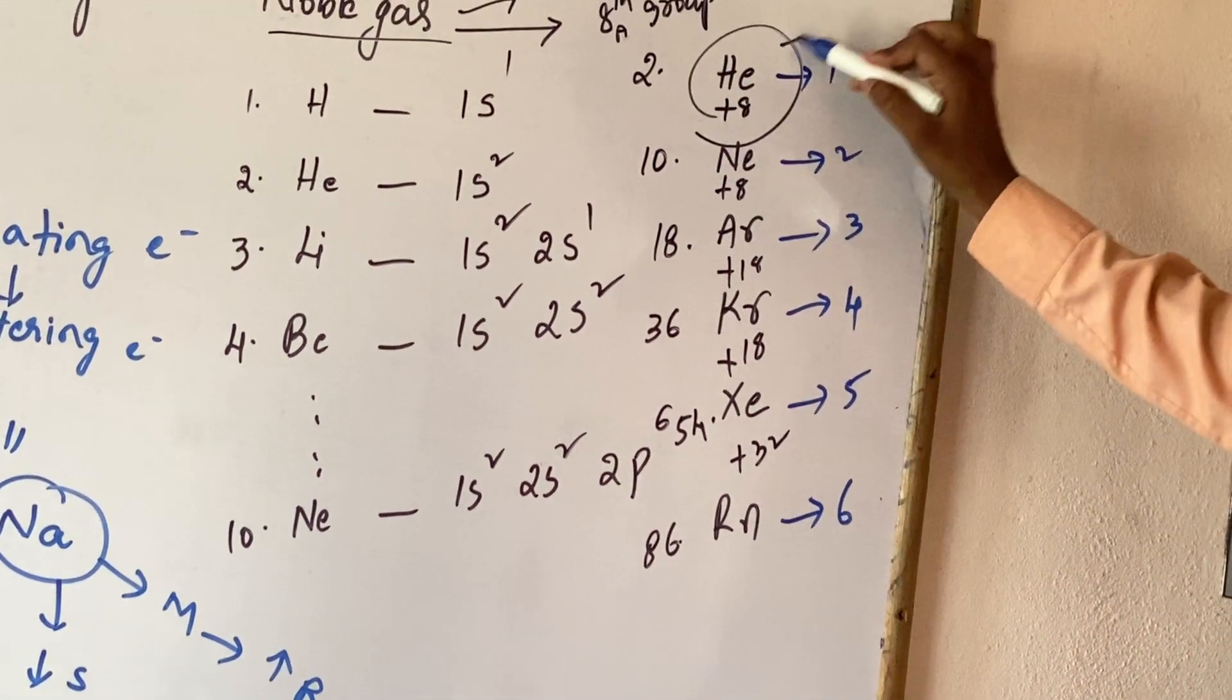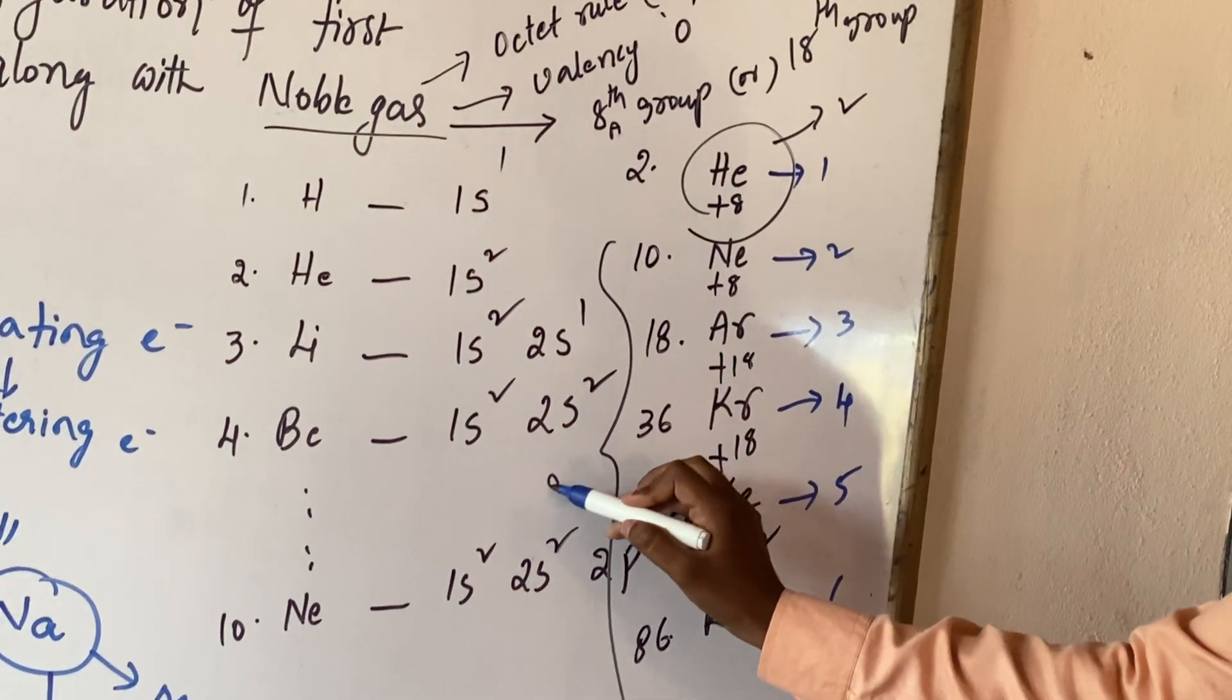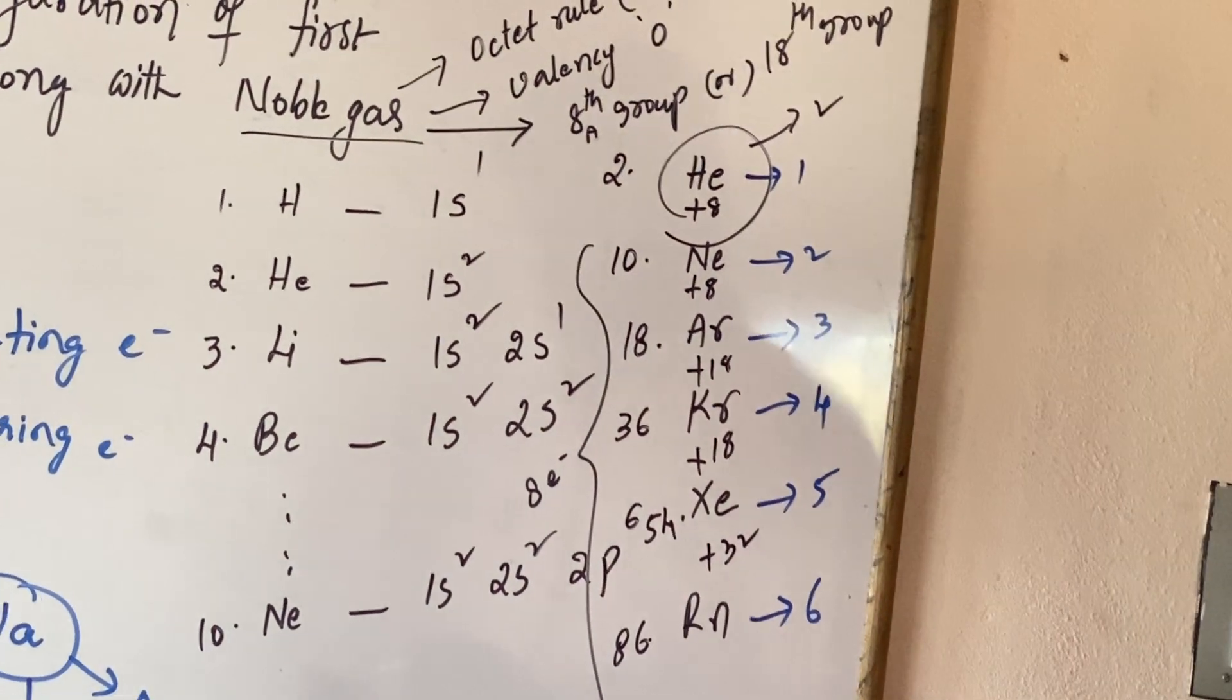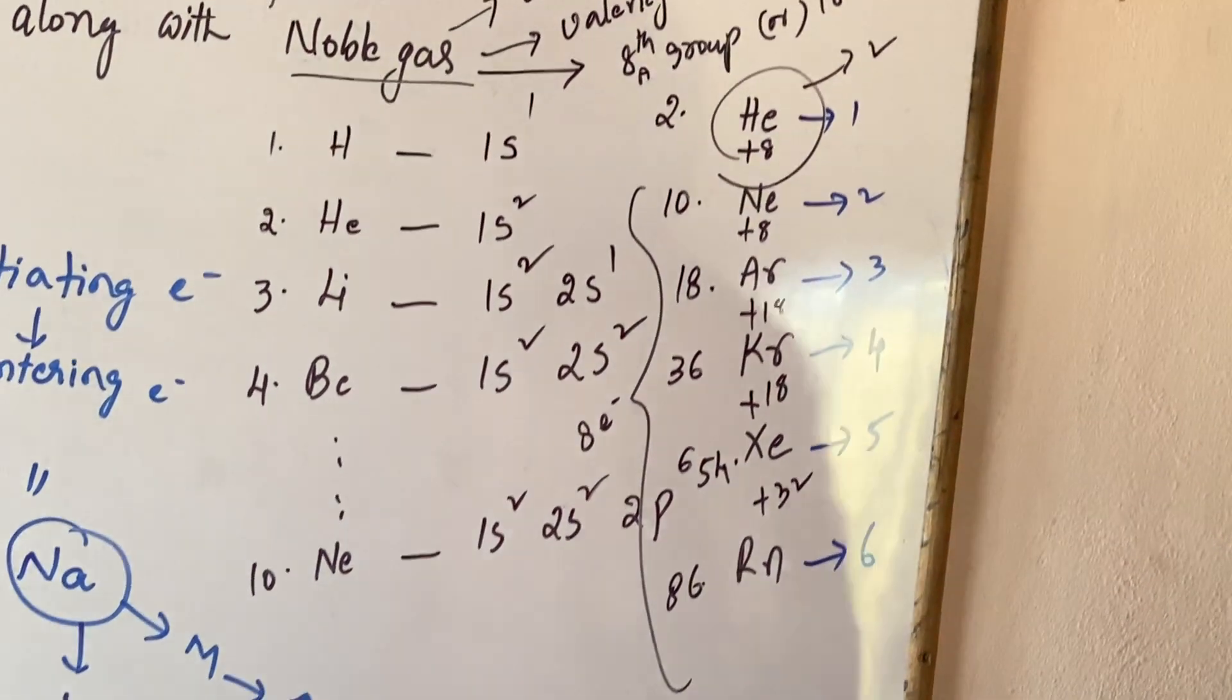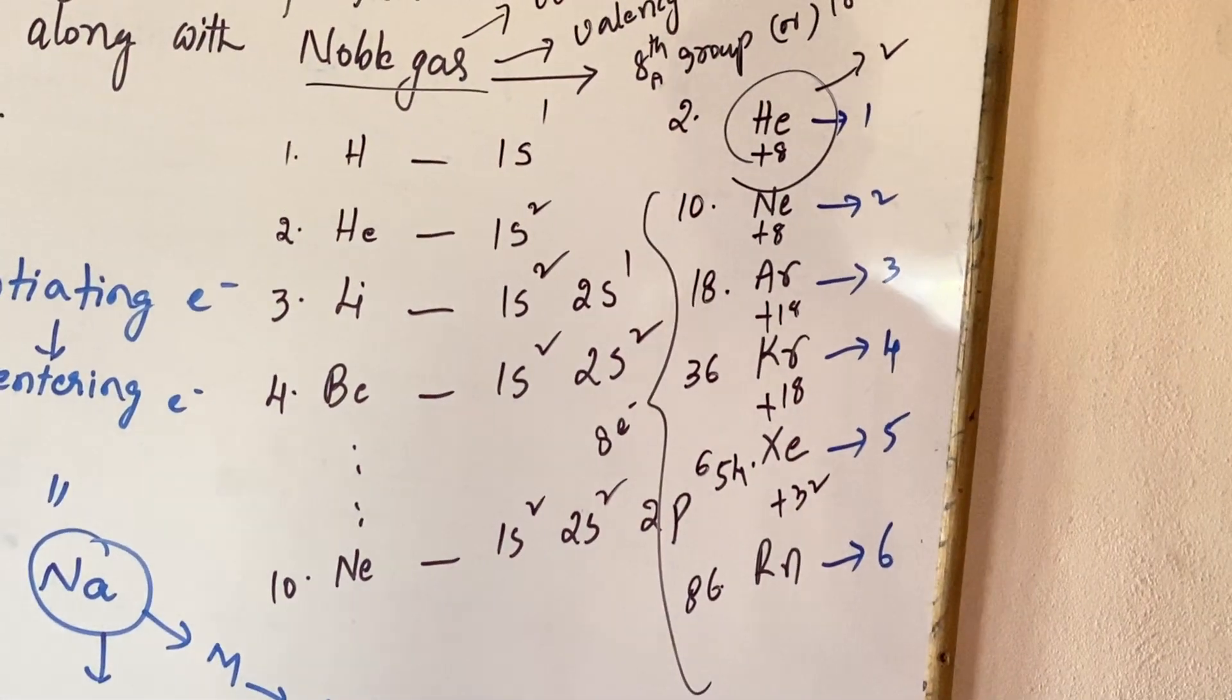Now, only helium can have duplet configuration, remaining can have octate, nothing but valency electrons are totally 8.